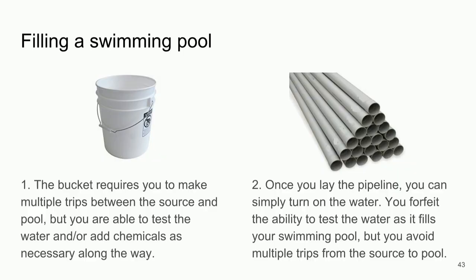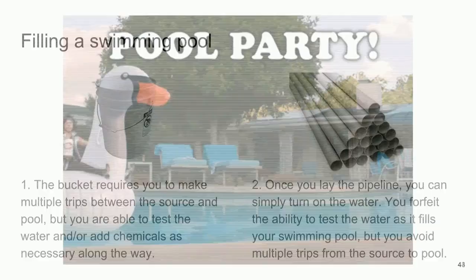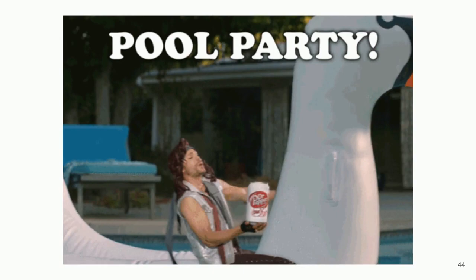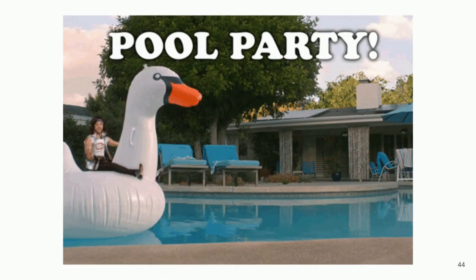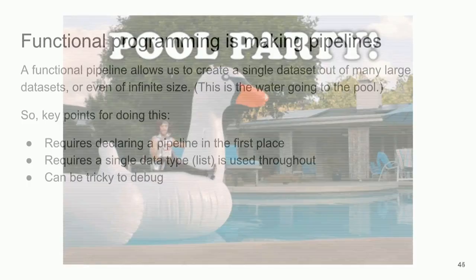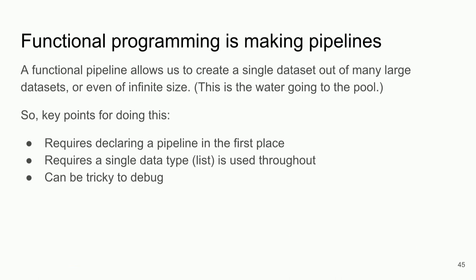These are my parallels for object-oriented and functional programming. We're having a pool party and we want to get the water in there as soon as we can. We're going to use functional programming to define a pipeline that connects the source to where we want the data to go. A functional pipeline allows us to create a single dataset out of many large datasets or even infinite ones — for example, if your computer has 8GB of RAM but you have 100GB of images, a functional pipeline lets you take that dataset in smaller pieces, update the gradients of your model, and then yield it out of memory over and over again.